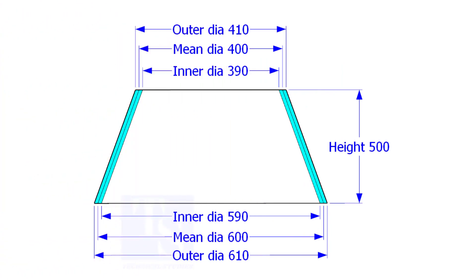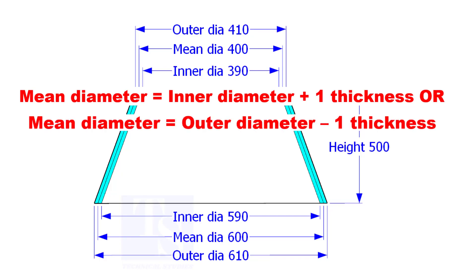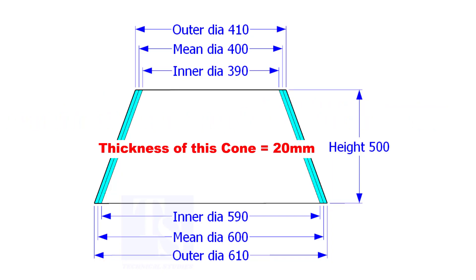Look at the cross section of the cone. What is the mean diameter? It is the center diameter of a circle or a sphere. For example, suppose the inner diameter is 1000mm and the thickness of the cone is 20mm, then the mean diameter shall be 1000 plus 20 equal to 1020mm.